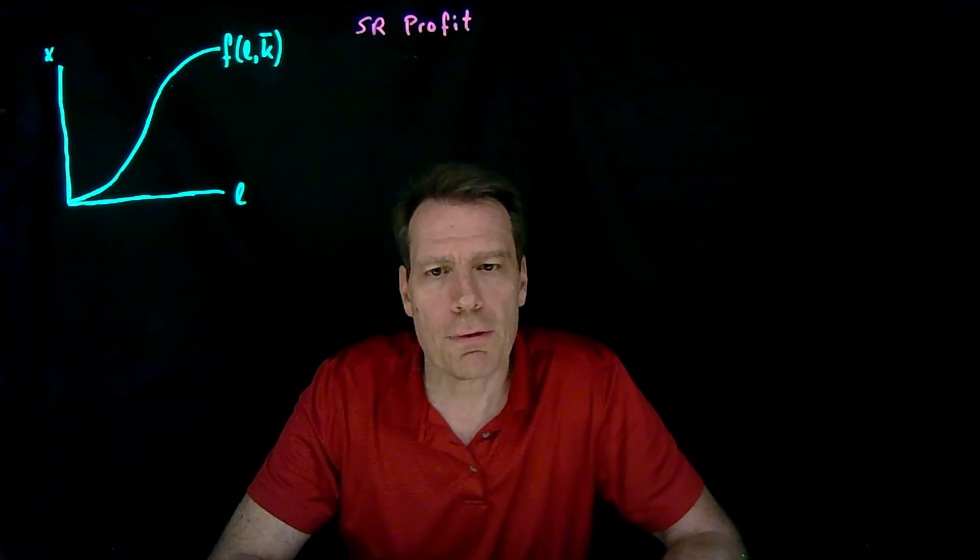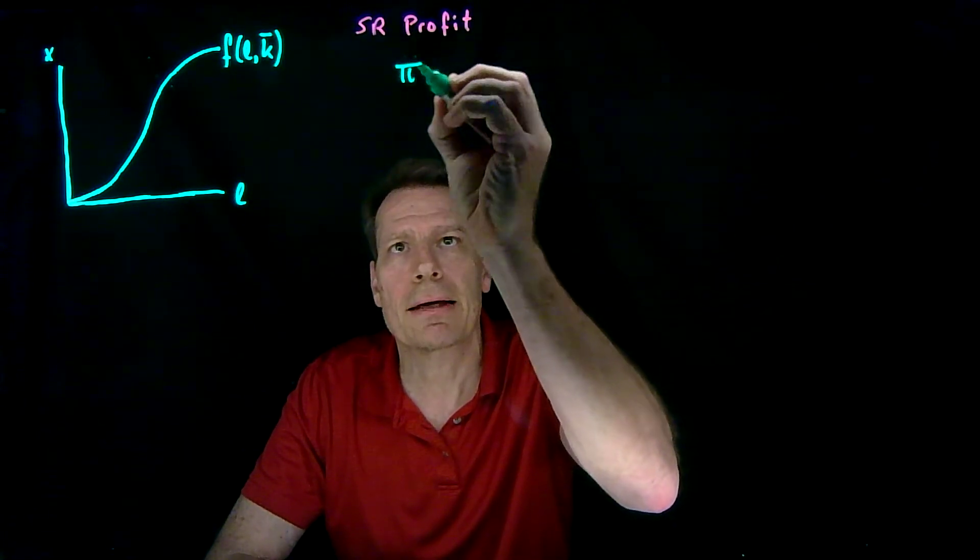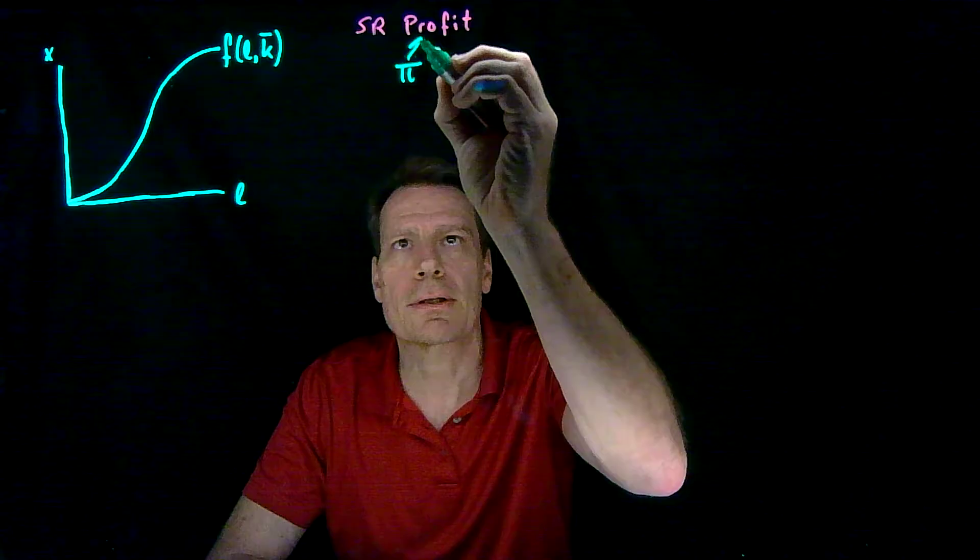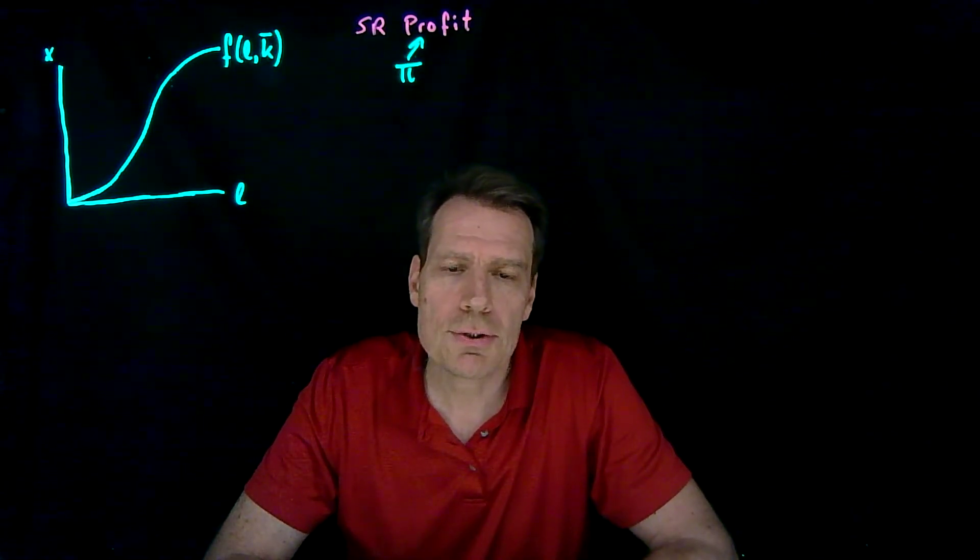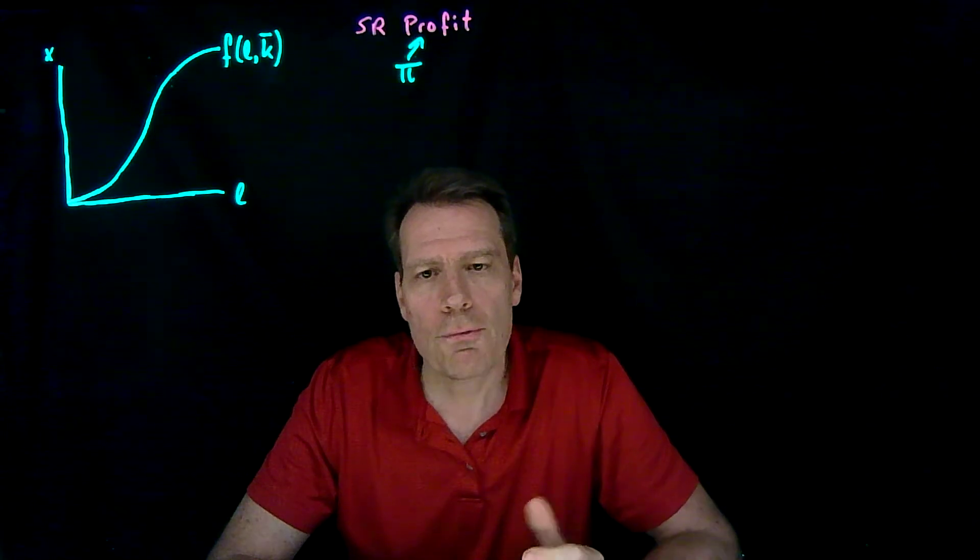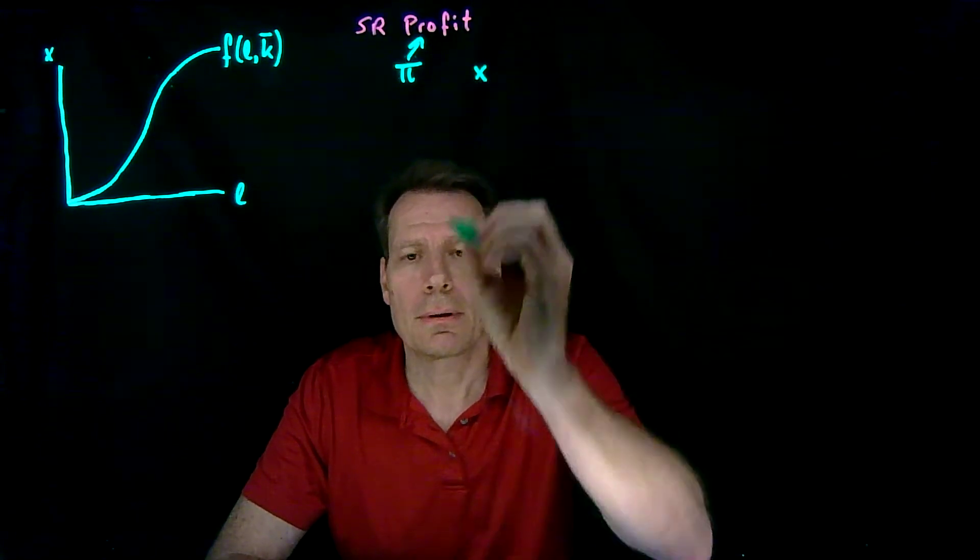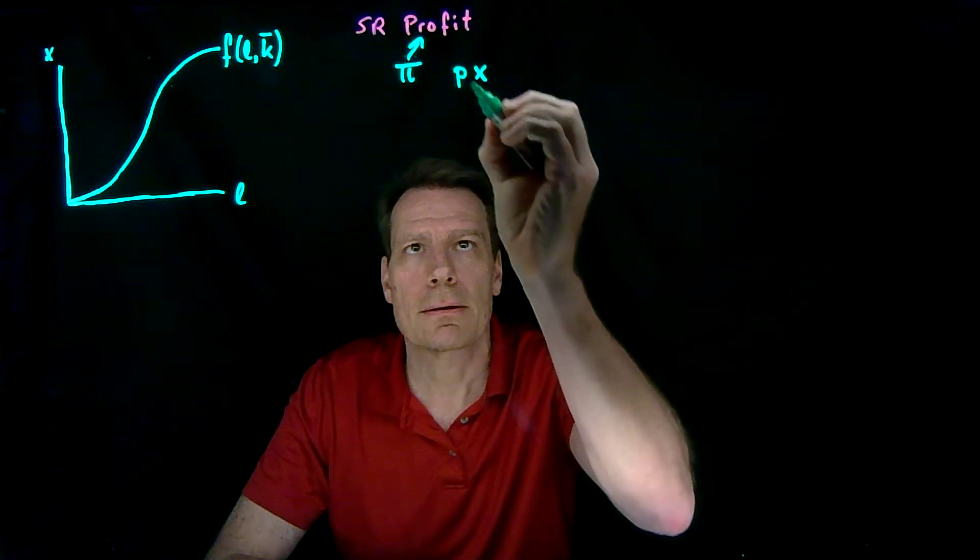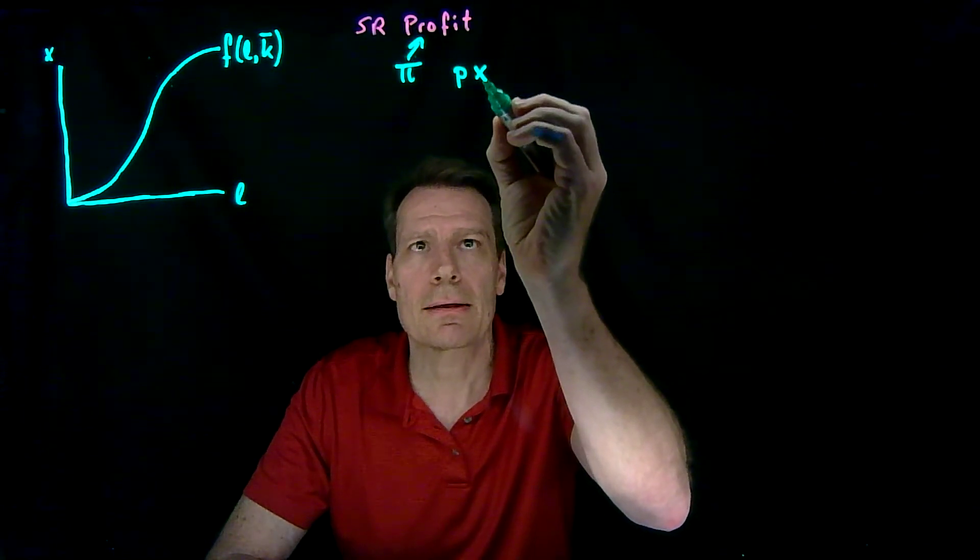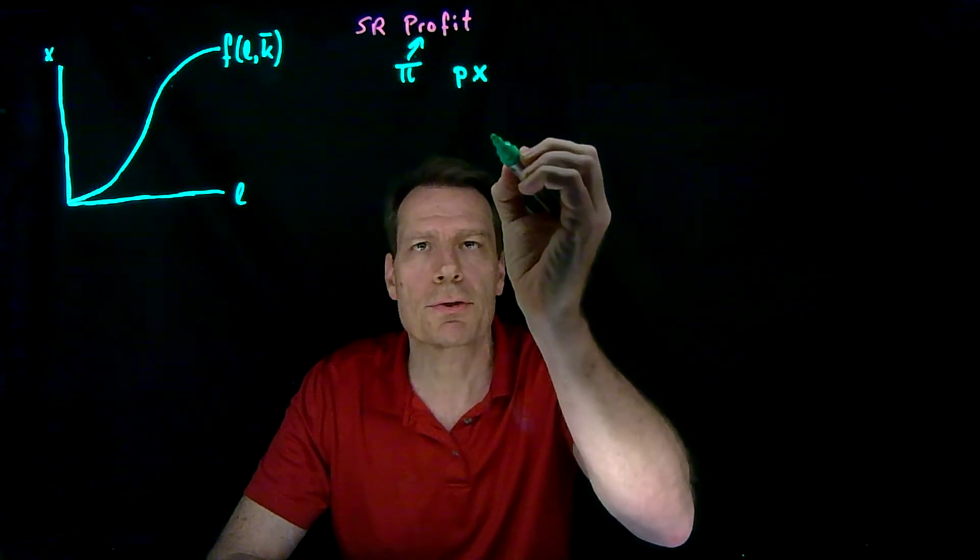So now let's turn to talking about profit. We're going to denote profit by the letter π, the Greek letter pi. It's just the difference between your revenues and your costs. Firms make revenues by selling output at a certain price. So the price times how much output they've produced gives us the total revenues for the firm.